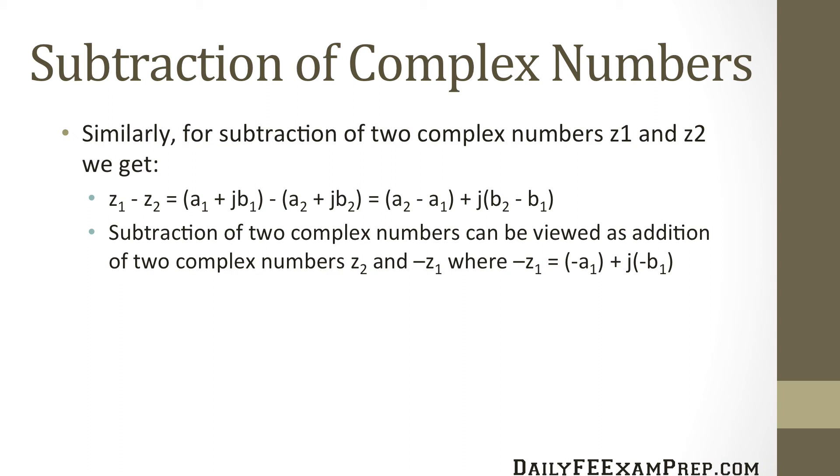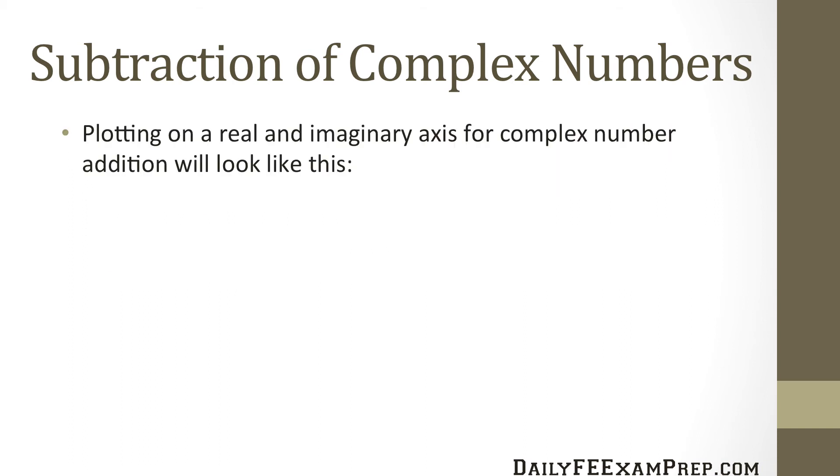So if we plot this on a real and imaginary axis for complex number addition it looks like this. Here we have our z2 minus z1, we also have z2 and z1 and we've also plotted minus z1 just to show you what it looks like. So this is what it would look like if we plotted this on a real and imaginary axis.